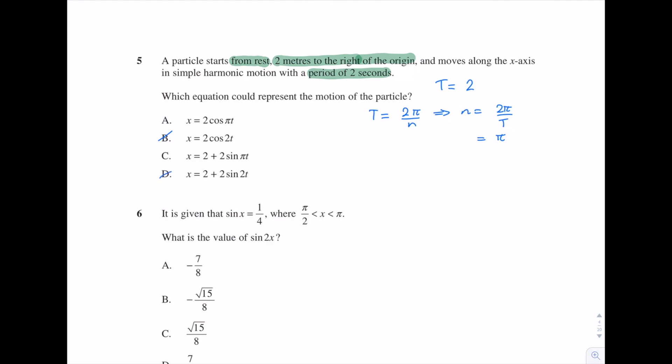How do we differentiate between A and C? That's where the first bit of information comes in. A particle starts from rest, 2 meters to the right of the origin. Now we know in simple harmonic motion that a particle is at rest only at the extremities. So on the right extremity and on the left extremity. So that means 2 meters to the right of the origin is an extreme point. Which means that in this case, in case C, it's telling us that the point x = 2 is actually the center of the motion. But that's not correct because we've just said that x = 2 is an extreme point. Which means we can eliminate option C, and that means A is our correct answer.